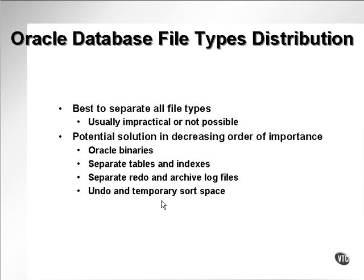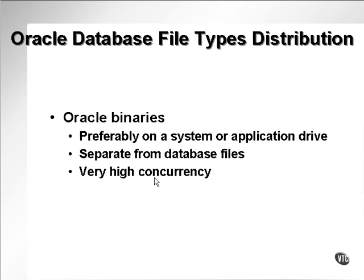You can also separate undo and temporary sort space. It depends on what types of activity are running at the same time. One of the most significant factors is putting redo log files onto the fastest drive type you have, separate from everything else — namely the database tables and indexes, the binaries, and the undo temporary sort space.